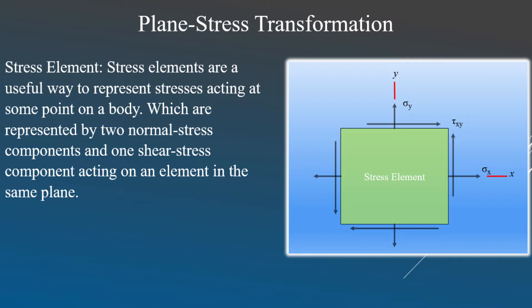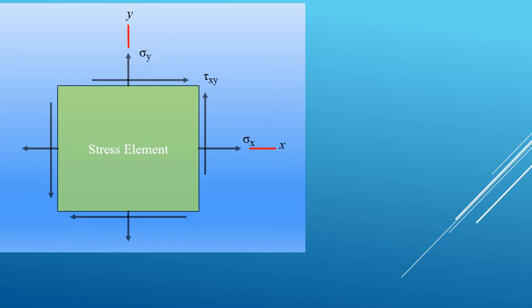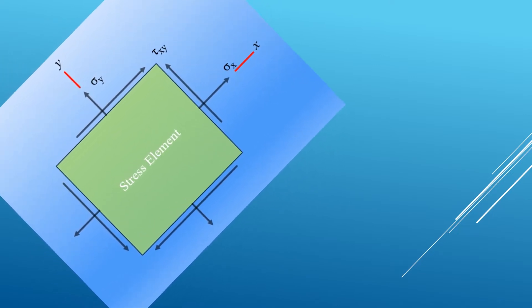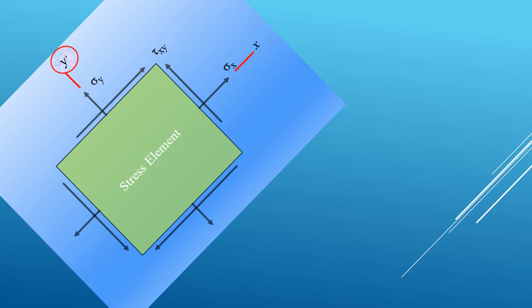When an element is in a plane stress in the XY plane, only the X and Y faces are subjected to stresses. The stress element is a useful way to represent the stresses acting on some point on a rigid body, represented by two normal stress components and one shear stress component acting on an element in the same plane. If we rotate our stress element to a certain degree, we can calculate the stresses at that angle, and we will get different values for normal stress and shear stress depending on the orientation angle.